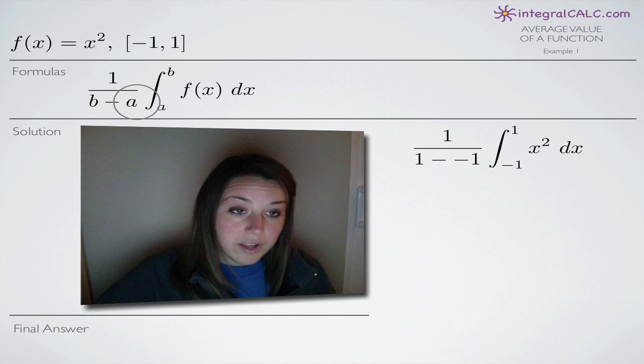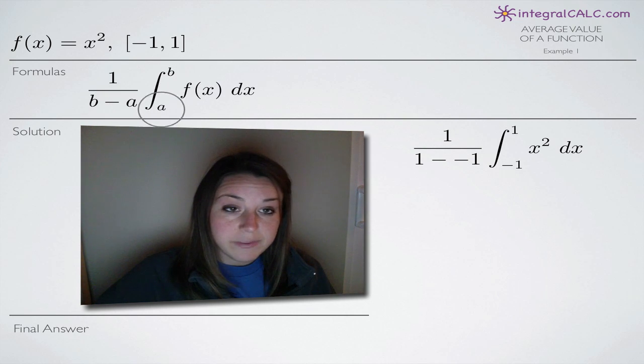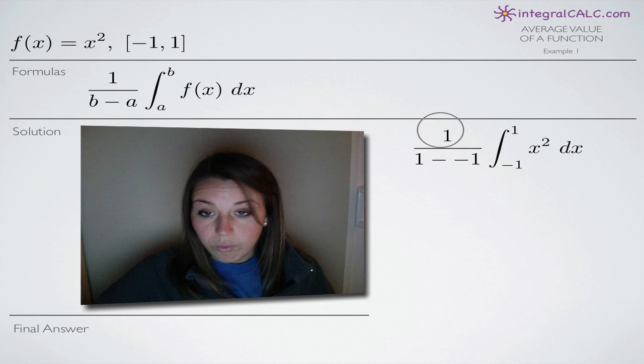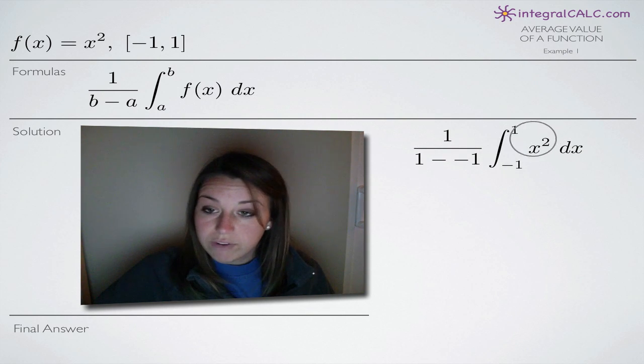So we're going to plug that in out here in front of the fraction and also as the limits of integration here. So we end up with 1 over 1 minus negative 1 and then we're integrating our function x squared from negative 1 to 1.